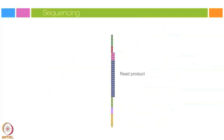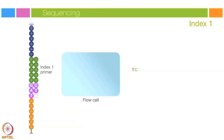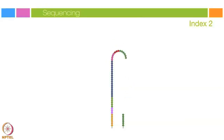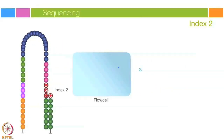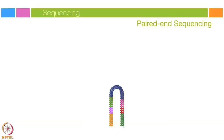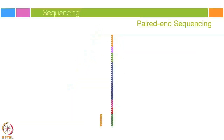After completion of the first read, the read product is washed away. The index one read primer is introduced and hybridized to the template. After completion of the index read, the read product is washed off and the three-prime end of the template is deprotected. The template folds over and binds the second oligo on the flow cell. Index two is read in the same manner as index one, and its read product is washed off. Polymerases extend the second flow cell oligo forming a double-stranded bridge, which is then linearized and the three-prime ends blocked. The original forward strand is cleaved off and washed away, leaving the reverse strand.